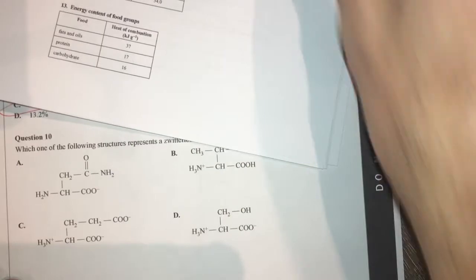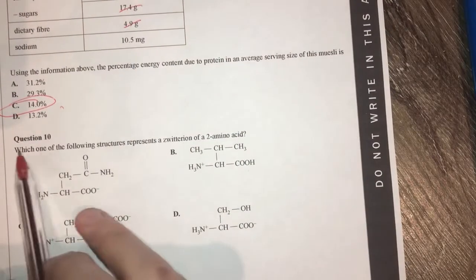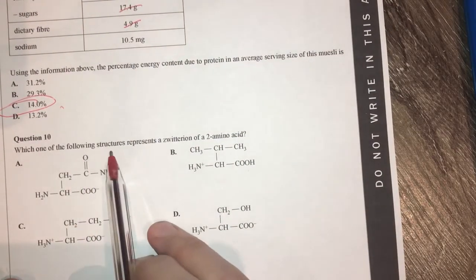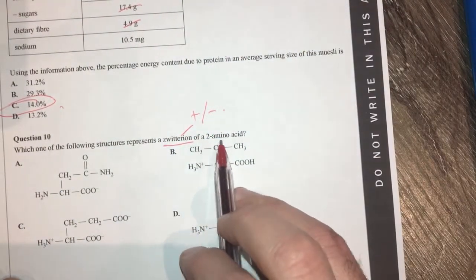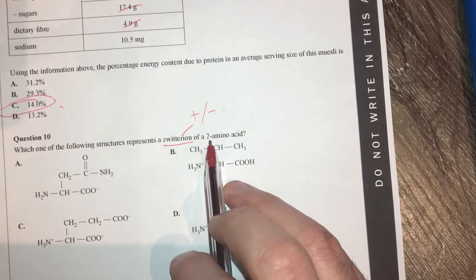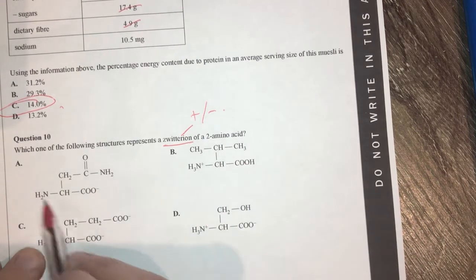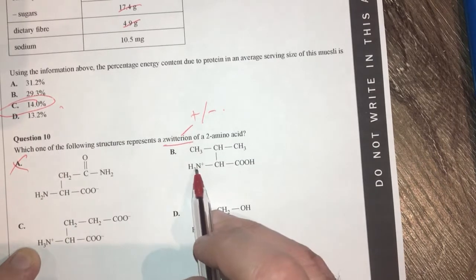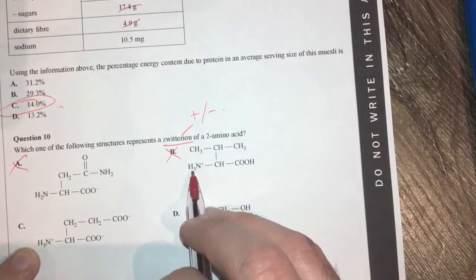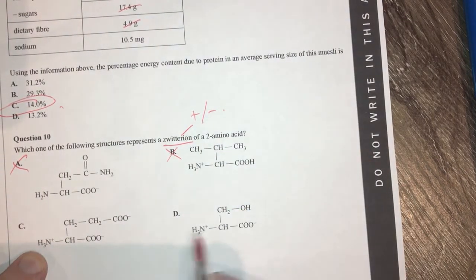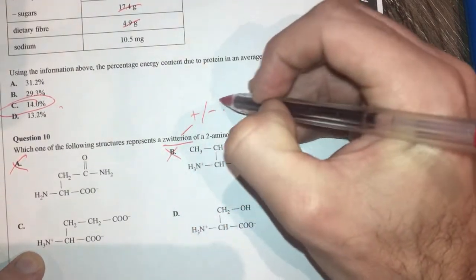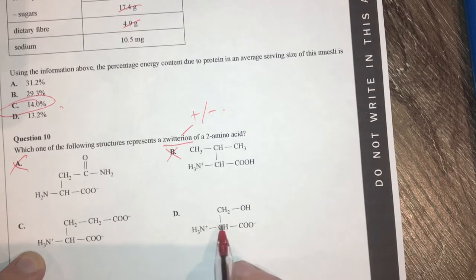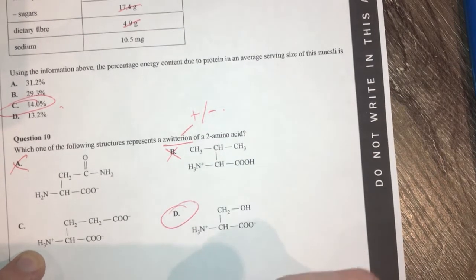And lastly in this video I'm going to be looking at question 10 which is which of the following structures represents a zwitterion. Zwitterions have both a positive and negative. So this only has the negative so it can't be A. This has only the positive so it can't be B. This has both and this has both.